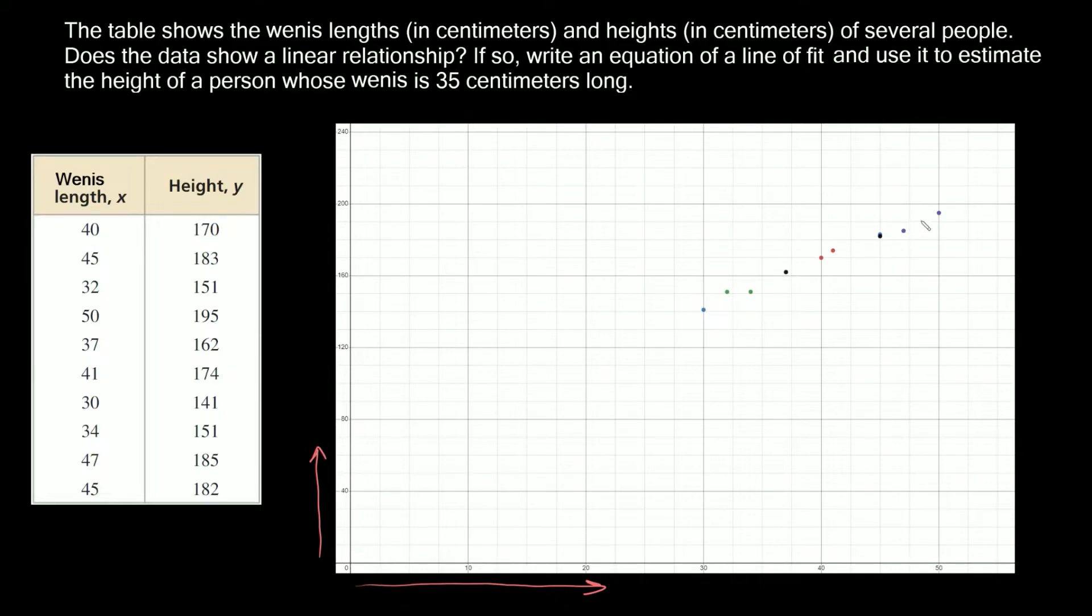From all the points that we plotted you can see that there's definitely a linear relationship. There's definitely a trend. All these points fall on approximately the same line. If I just drew kind of a random line like that you can see all the points are pretty close to this line. So going back to the first question, does the data show a linear relationship? Yes it definitely does.